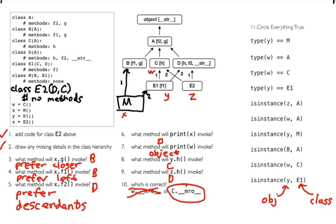What is the type of Y and is it equal to M? The type of Y is E1, so that's false because E1 is not equal to M. The next one: the type of W is C — is C equal to A? No, it's a different class, so that's false too.